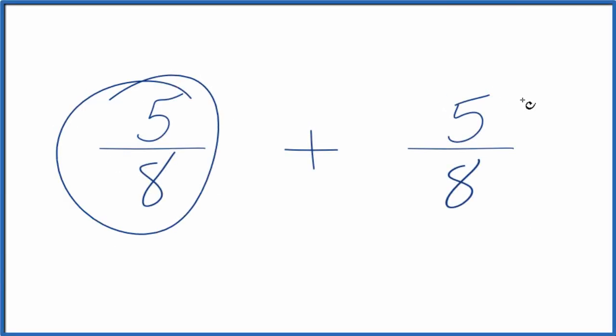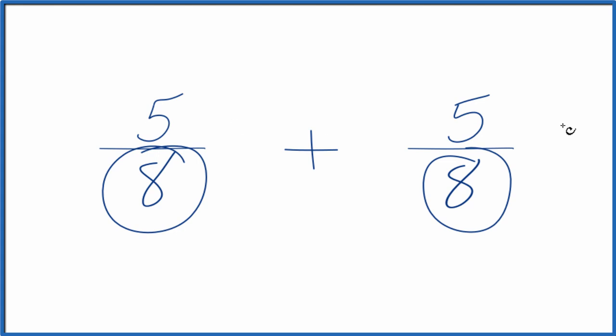Let's add the fractions 5 eighths plus 5 eighths. The key here is when you're adding fractions, if you have the same denominator, all you have to do is add the numerators together and then just keep the denominator the same. So that makes this kind of easy here.